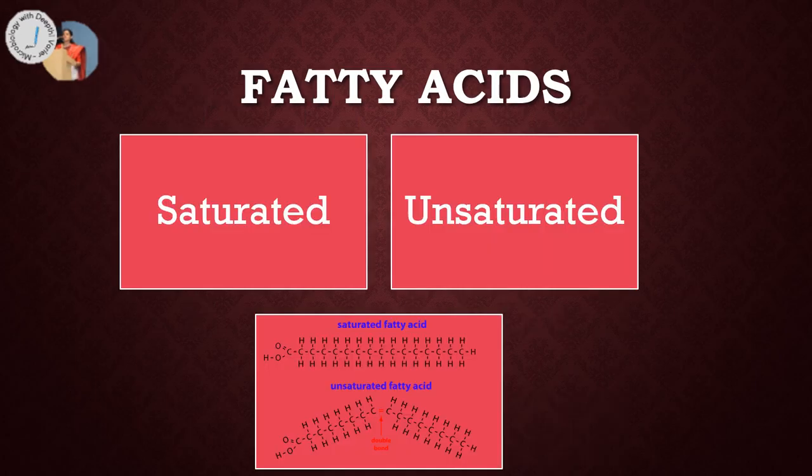Now there are two types of fatty acids: the saturated ones and the unsaturated ones. Saturated ones are the fatty acids which do not have any double bond between the carbon atoms, as you can see over here. Whereas unsaturated fatty acids can have one or more than one double bond. So palmitic acid is an example of a saturated fatty acid, and we are going to talk about how this fatty acid is being synthesized in the cell.